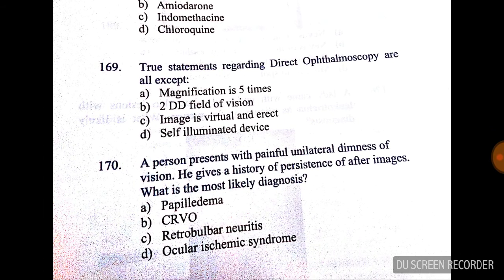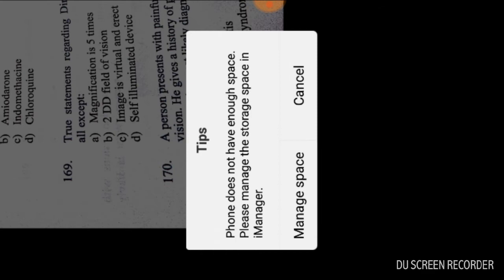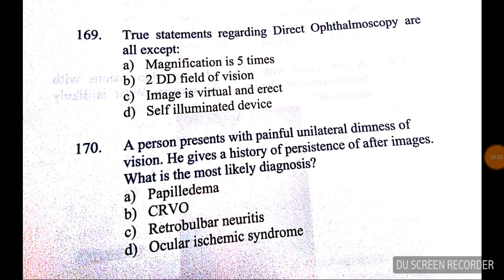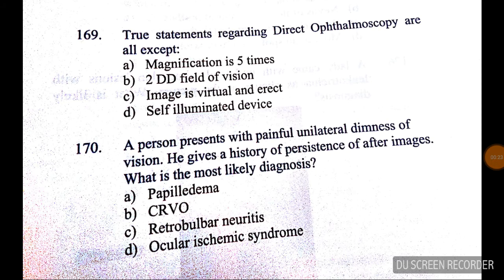Question number 168: whorl-like corneal opacities are seen in all except — they can be seen with amiodarone, indomethacin, chloroquine, but not with chlorpromazine. Question number 169: true statements regarding direct ophthalmoscope are all except — the answer is not known here; you can answer in the comment box.